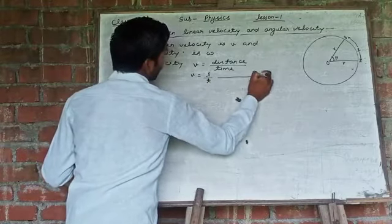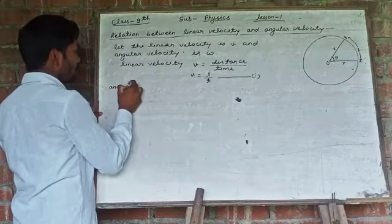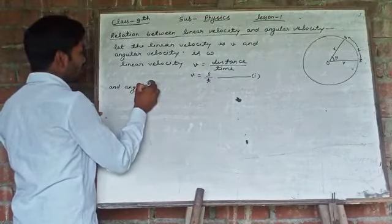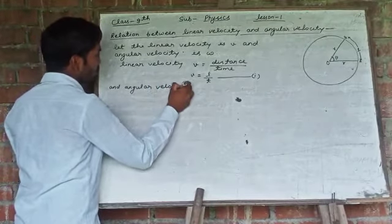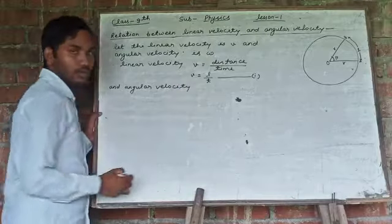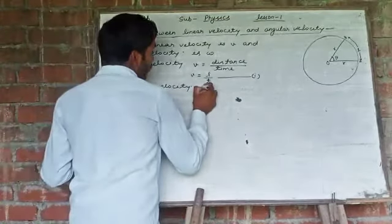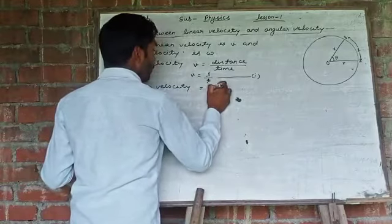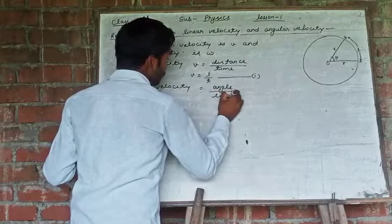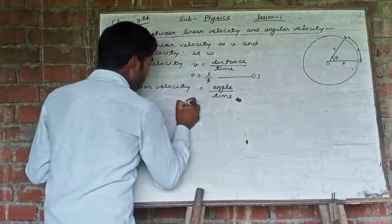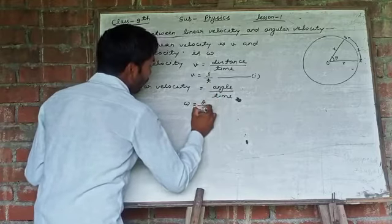And angular velocity, so ω is equal to angle upon time. So, angular velocity omega is equal to theta upon time.